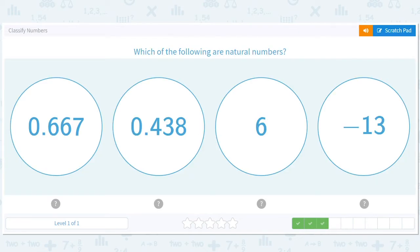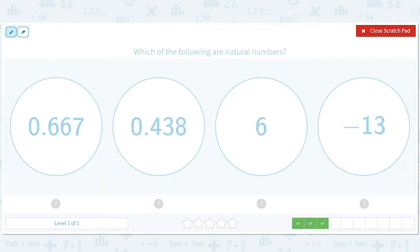Which of the following are natural numbers? All right, so I think we know. 6, right? 1, 2, 3, 4, 5, 6.